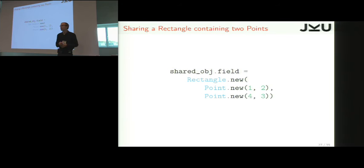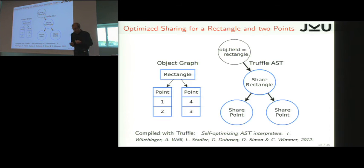So here, we can write to a shared object field and write a rectangle that references two points. It's like the two corners of the rectangle. And what we do is we take the structure of the object graph, this kind of triangular structure, and we build a tree that looks exactly the same.